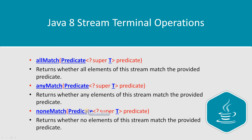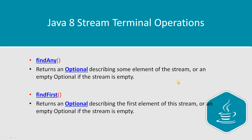For example, with a stream of 1 to 10, if your condition is 'any element less than zero', since no element satisfies this, there will be no match and you get true as a result. Next are findAny and findFirst — both are used to find an element matching a given condition.